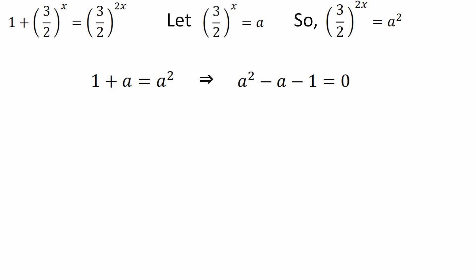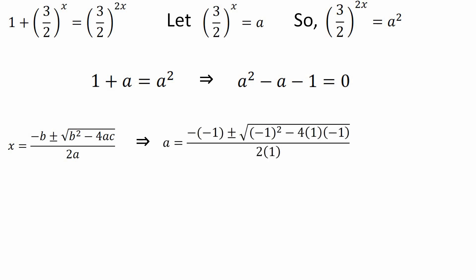Using the quadratic formula, x = (−b ± √(b² − 4ac)) / 2a. Substituting a = 1, b = −1, c = −1, we get a = (−(−1) ± √((−1)² − 4(1)(−1))) / (2 × 1). On further simplification we get a = (1 ± √5) / 2.